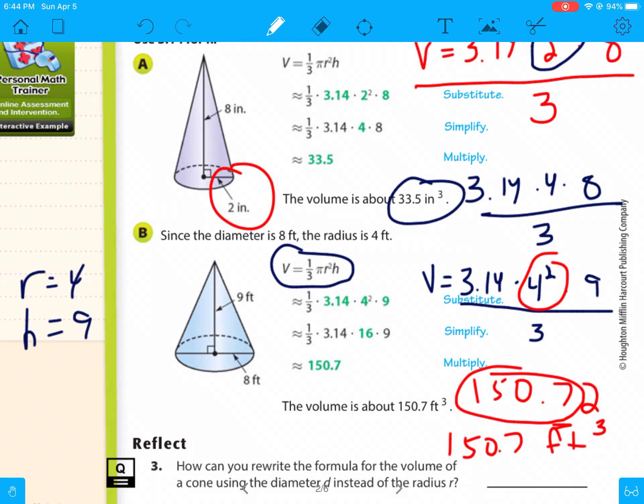So this is the same exact stuff as the last module, except divide it by 3, because a cone is one-third the size of a cylinder with the same base and the same height.